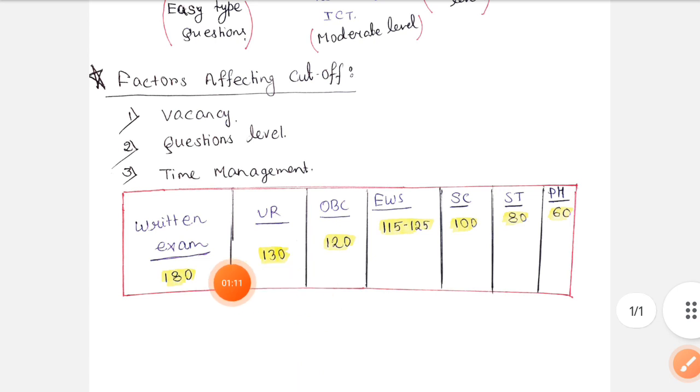So we can predict the cutoff that general category is going to be 130, and for OBC that is 120 above. EWS we can say 115 to 125. SC 100 and ST 80. For PH that is 60 to 65.